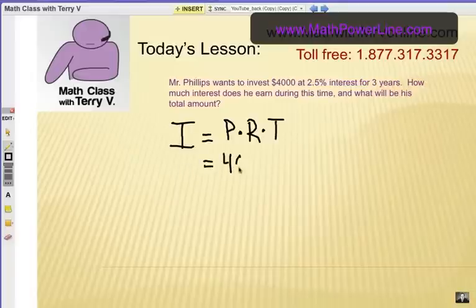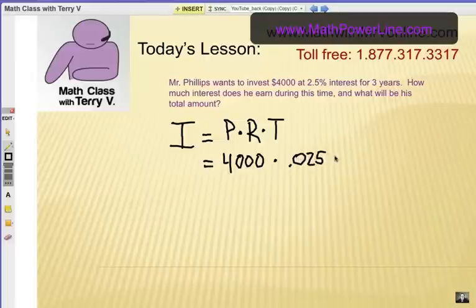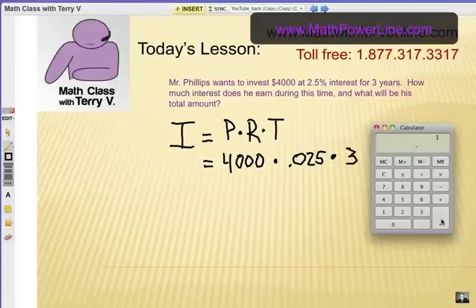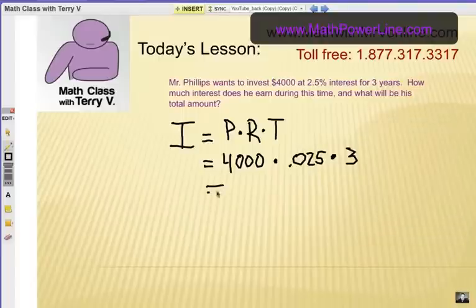And then we are going to just do some straight multiplication here. What's the principal? $4,000. What is the rate? 2.5%. Remember that's .025. And what's the time in years? It would be 3. So simple multiplication. So we put that in the calculator and we're going to get $300. Very interesting, $300.